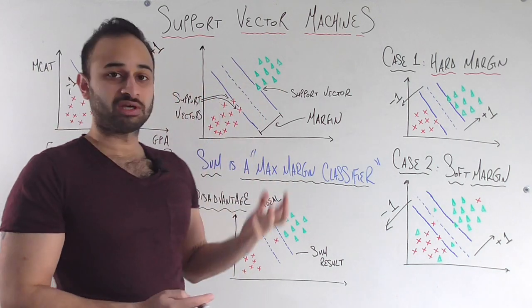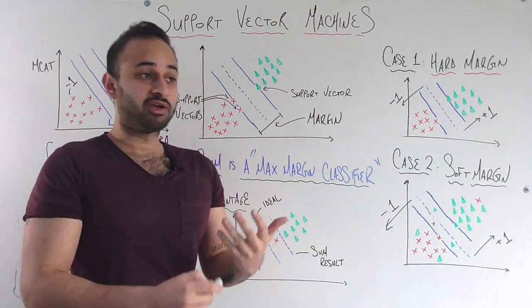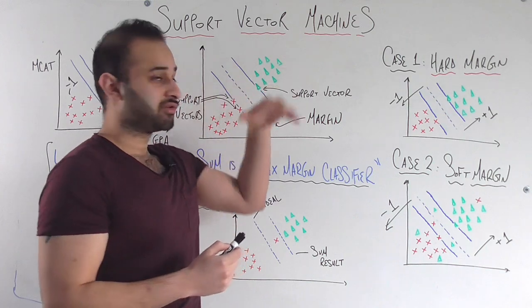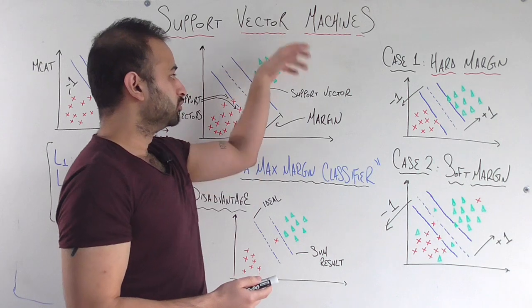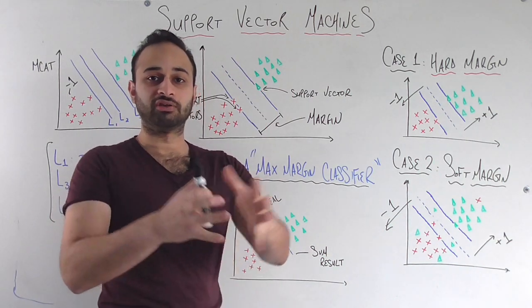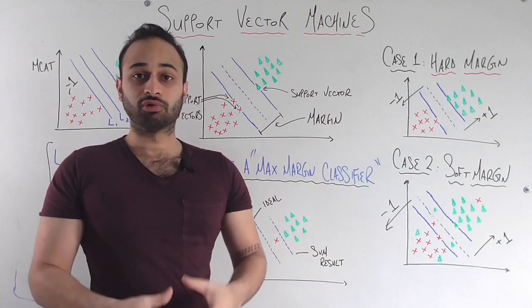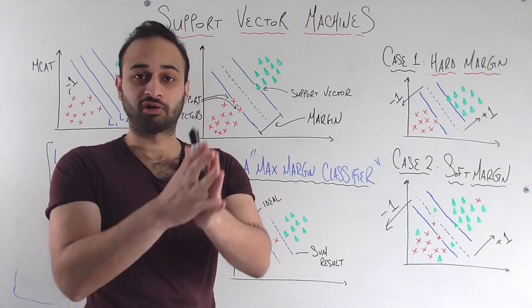All the other data points that we're looking at are not directly contributing to where the margin is. Now another thing to note is that that means that every other data point in our data set is irrelevant in the sense that if we were to move these around, they don't change where the decision boundary is going to be and they don't change how big the margin is going to be. That is only dependent on the support vectors. And that's why this is called a support vector machine.